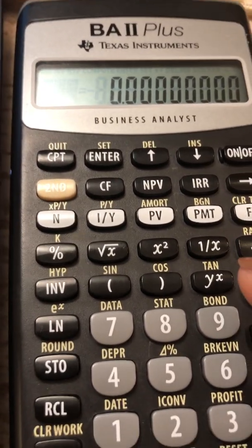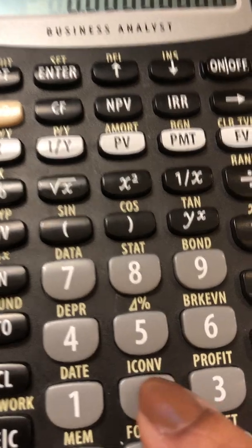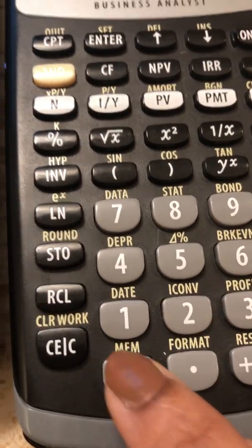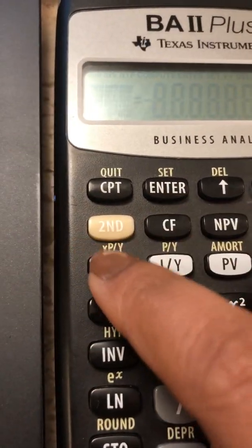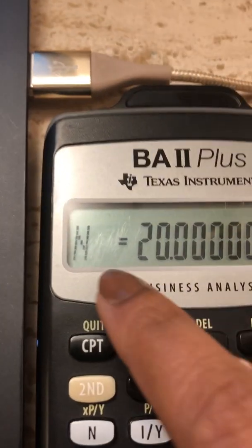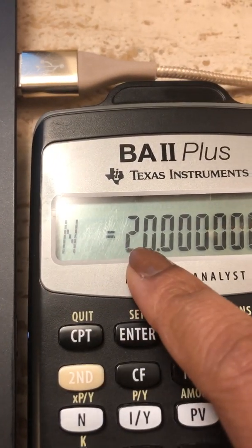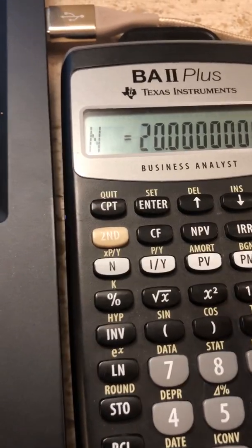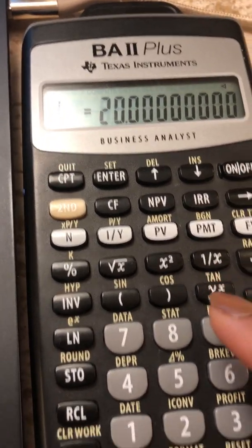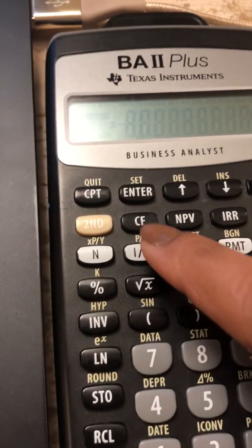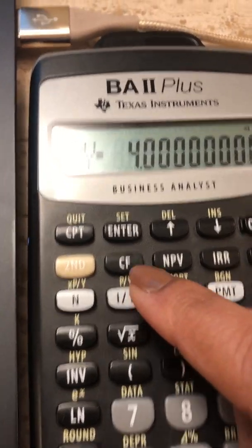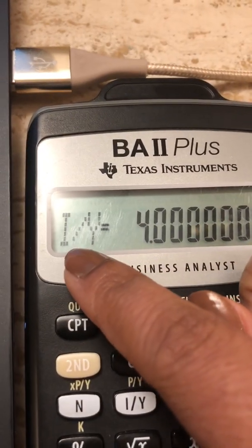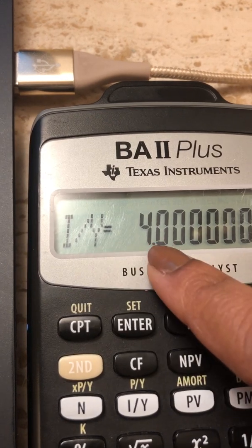So I have N equal to 20. So I'm going to put in 20 and then hit N, essentially setting N equal to 20, after which I have an interest rate of 4%. So I have 4, and then I hit my I by Y, setting my interest rate per year of 4.